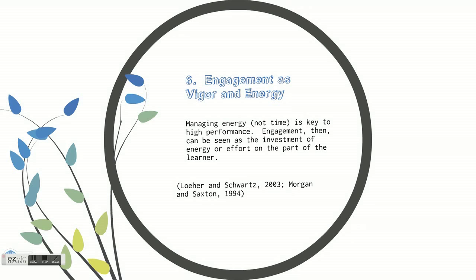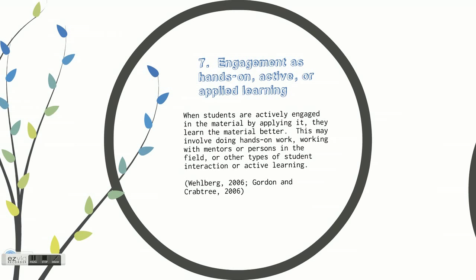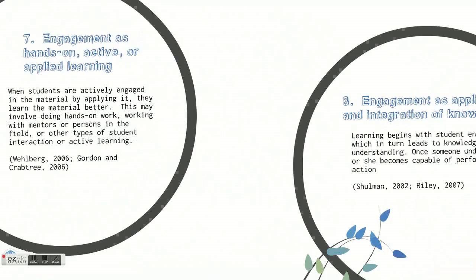While all those things could be true, another definition of engagement is working in a more hands-on environment. Engagement as hands-on, active, or applied learning: students are actively engaged in the material by applying it, and they learn the material better this way. This may involve doing hands-on work, building projects, working with mentors or persons in the field, making models, or other types of student interaction with active learning.